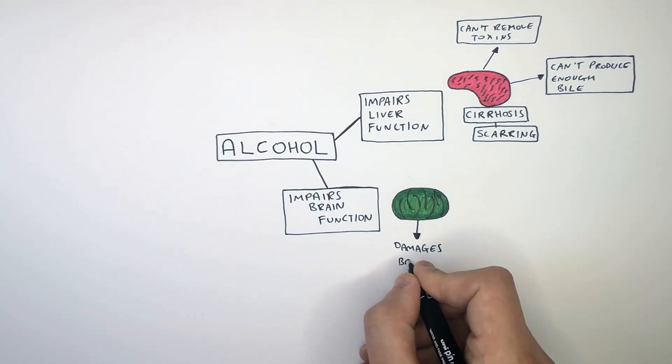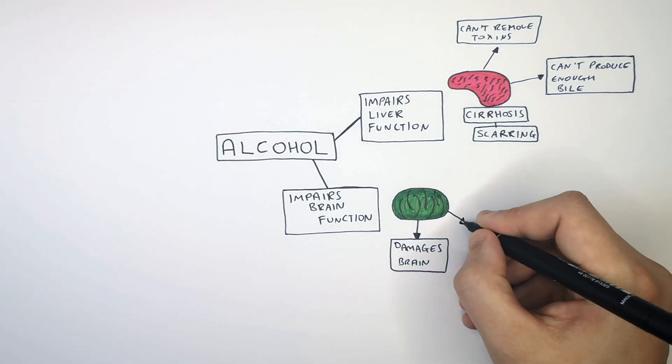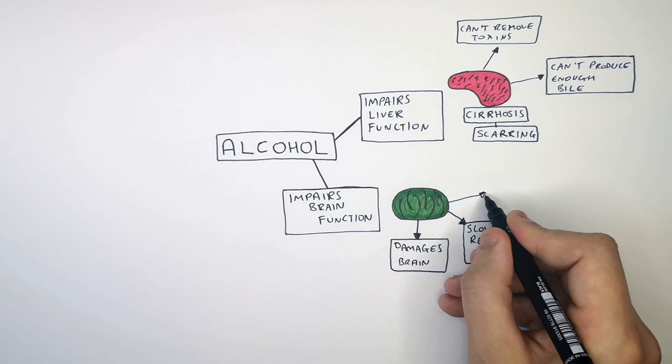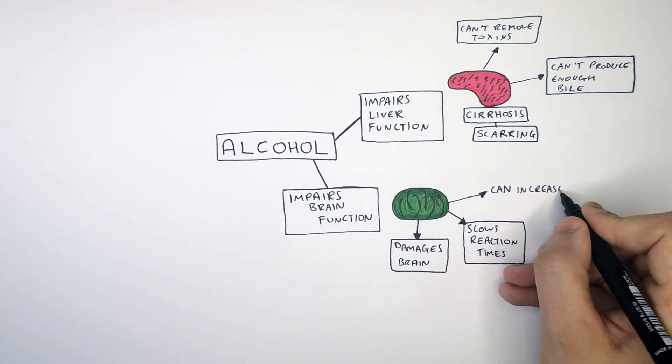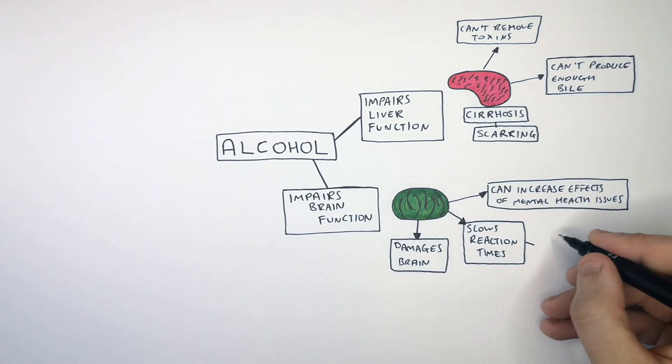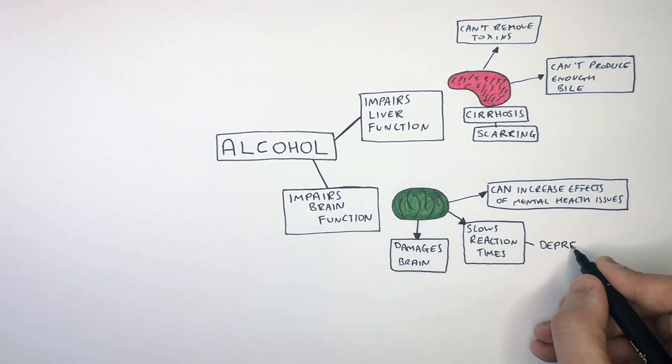So remember, alcohol can damage the brain. It can also slow down your reaction times. And if you have mental health issues, it can really increase the effect of mental health issues if you drink too much. This is because alcohol is called a depressant.